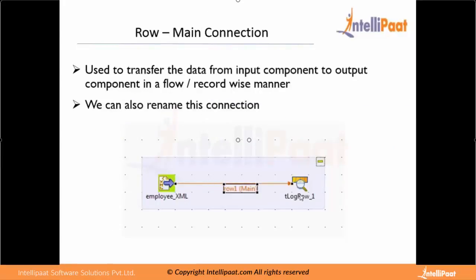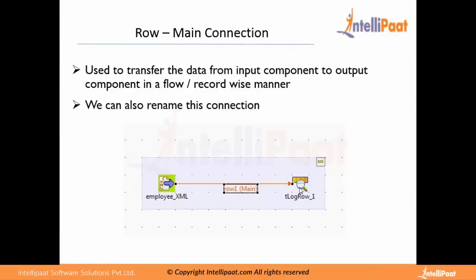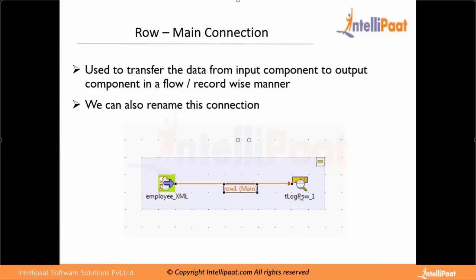Connections are primarily something you must have already seen. I had shown them while demonstrating various components. First and foremost is a Row Main connection, which you must be pretty much familiar with. This connection is used to transfer data from the input component to the output component. It transfers data in a record-wise manner — first record, second record, third record, and so on. It does not transfer all the data at once.